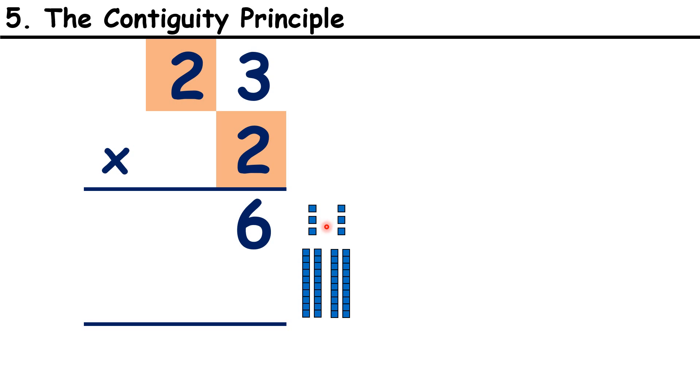So here, I've shown 3 multiplied by 2 next to where we write 6, and 20 multiplied by 2 next to where we write 40.